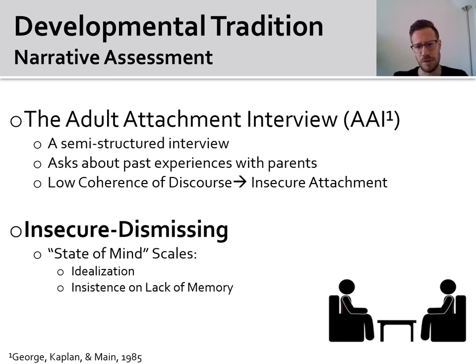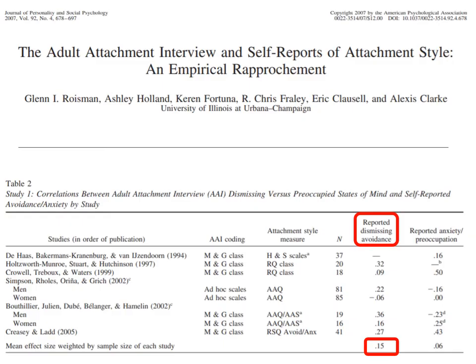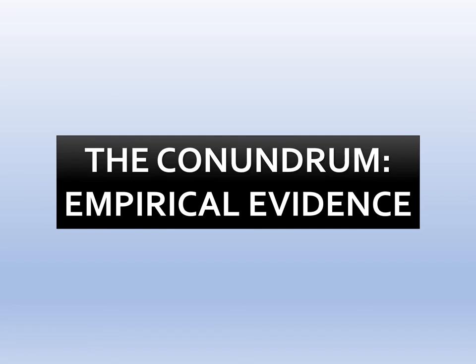For example, such participants may report that their relationship with their parents were very loving or very warm, but will find it very difficult to remember or come up with an example of such idealized relationships. Of note, in a small-scale meta-analysis, the two traditions' assessment of insecure avoidance is shown to only trivially correlate, with a correlation coefficient equal to 0.15. So we can already see that the two traditions' assessment of attachment avoidance do not align very well with one another.